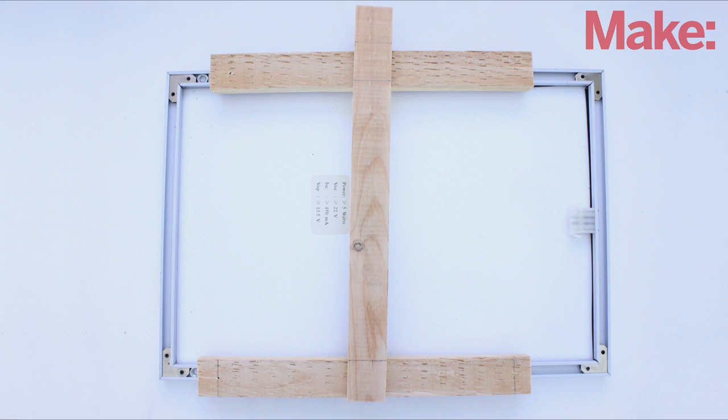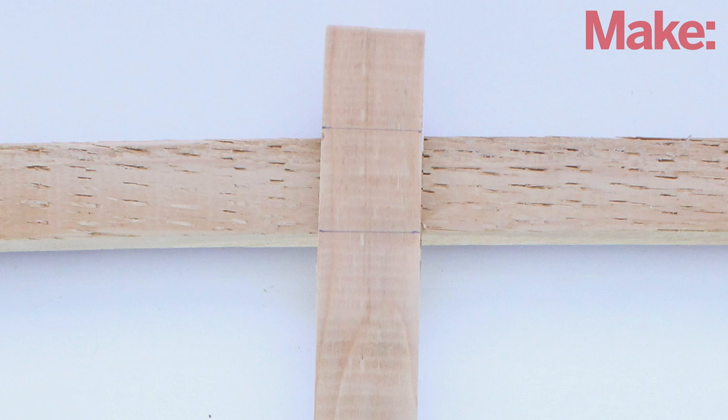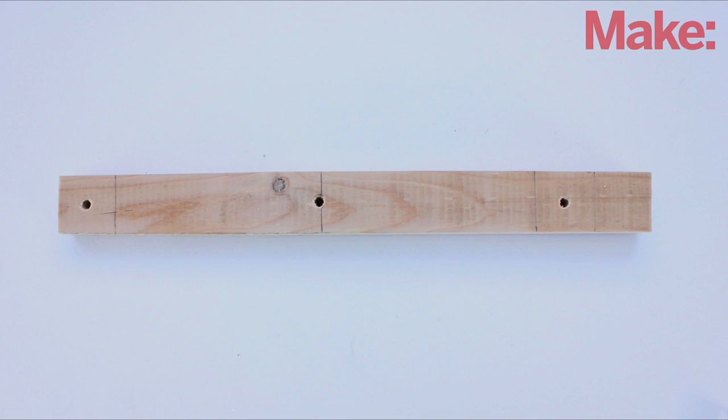Now, lay the third board on top so that the bottom end is flush with one side board, and the top board sticks out an inch and a half past the other side board. Mark the outline of where the boards intersect. Drill two ¼ inch holes in this board that line up with the holes on the first two boards. Then drill one more hole centered between them.